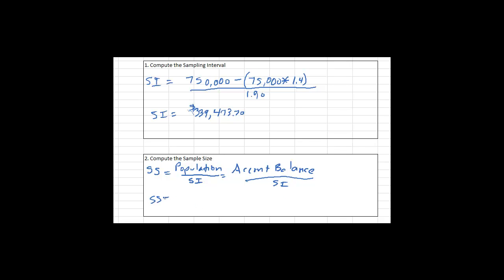For this problem, it's $10 million divided by $339,473.70, and you come out with 29.46. But we cannot have a partial item in our sample, so the sample size can't be 29.4 — we'll use 30.